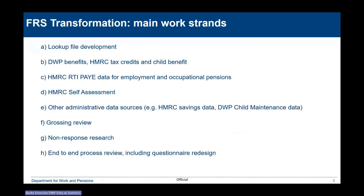The main work strands we've been looking at since the start of this project: the lookup file development — we've got a method and process giving us high quality matches for 95% plus of respondents, but there's more we can do and we're looking to refine that over time. Working on DWP benefits, HMRC tax credits and child benefit is one strand. RTI data from HMRC and self-assessment is another, along with other admin sources. At the start of the project we didn't realise that grossing was going to be a fairly major issue, and it became a work strand all of its own.